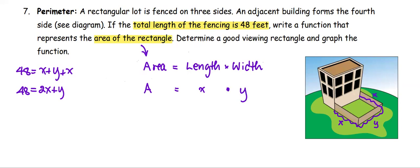We can write y in terms of x using the total fencing here, which is 48 equals 2x plus y. Write y as 48 minus 2x.